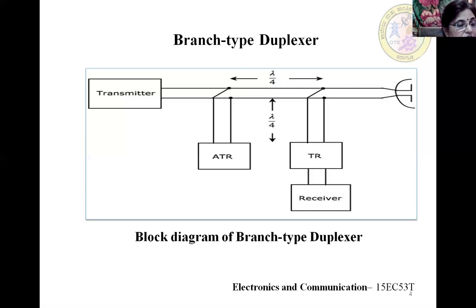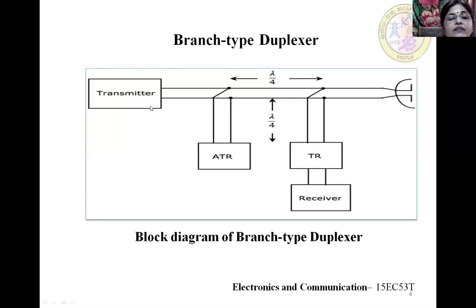Therefore, a radar duplexer is the microwave equivalent of a fast, low-loss, single-pole, double-throw switch. The devices developed for this purpose are similar to spark gaps, in which high-current microwave pulses furnish low-impedance arcs. In the figure you can see the transmitter and two switches: the ATR switch connected to the transmission line.